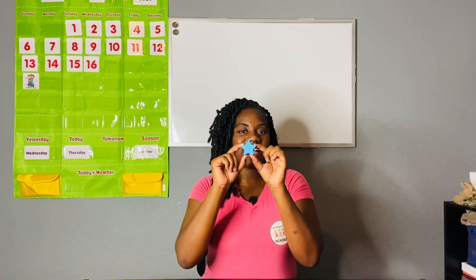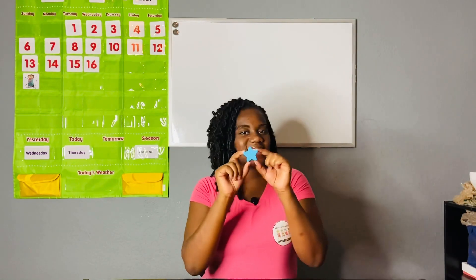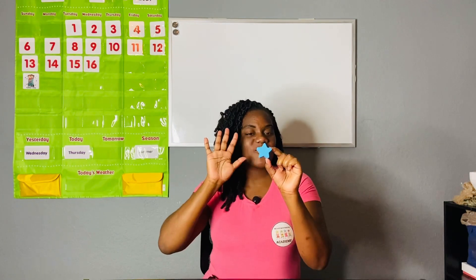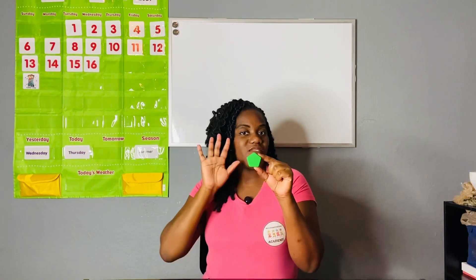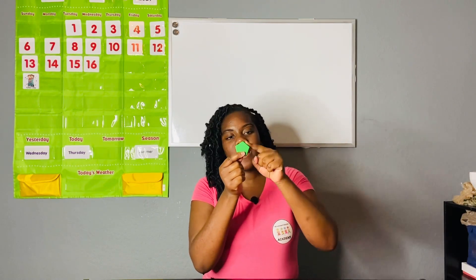The next shape is a star. Twinkle twinkle little star — a star has five points: one, two, three, four, five. Our next shape is a pentagon. A pentagon has five sides and five corners: one, two, three, four, five. Remember it has the pointy top. A pentagon.